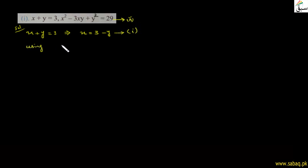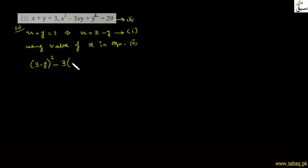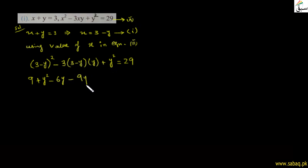Use value of x from equation 1 in equation 2: equation 1 سے x = 3 − y نکال کر equation 2 میں جہاں x ہے وہاں 3 − y لکھیں گے۔ Formula a − b whole square = a² + b² − 2ab استعمال کرتے ہوئے expand کریں۔